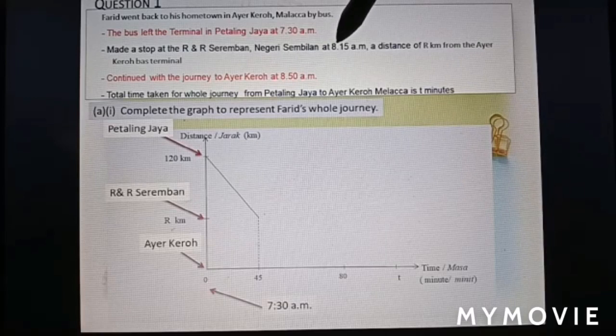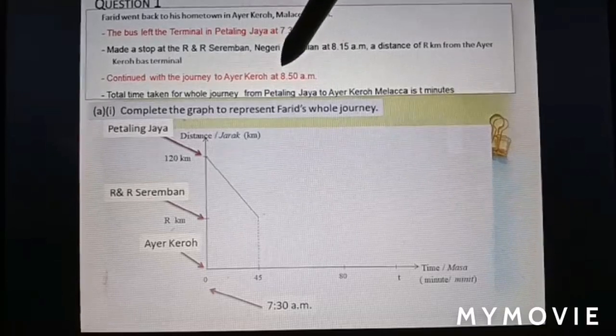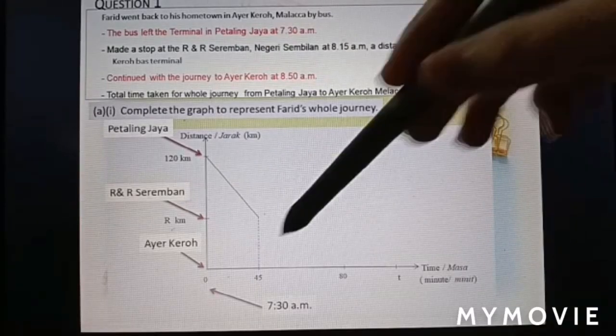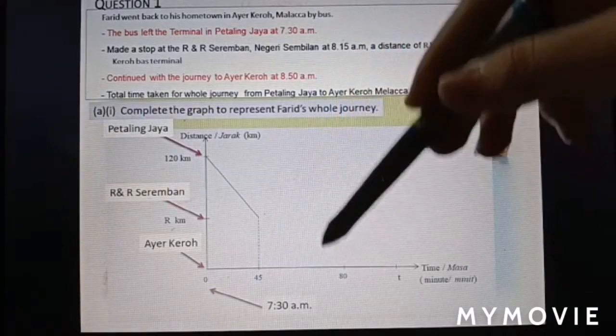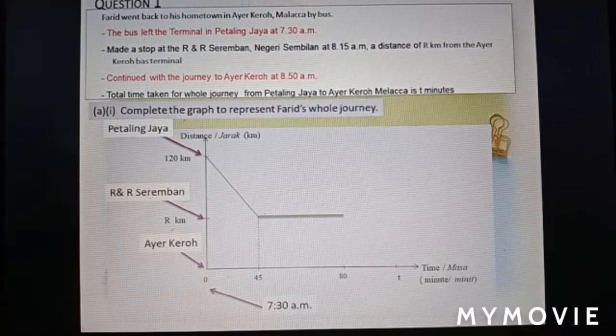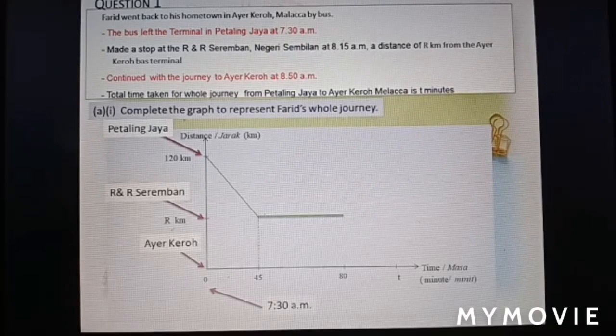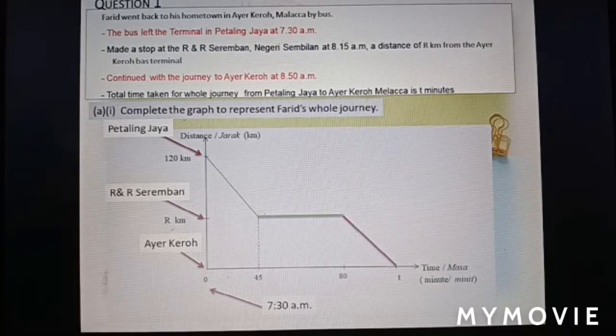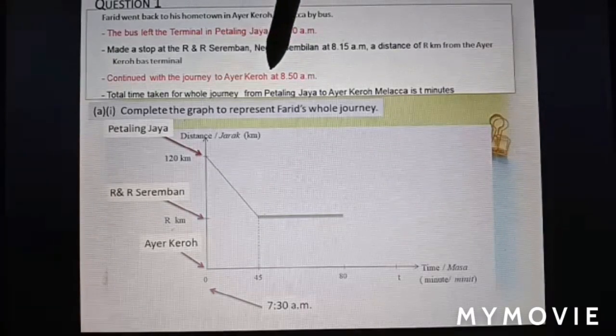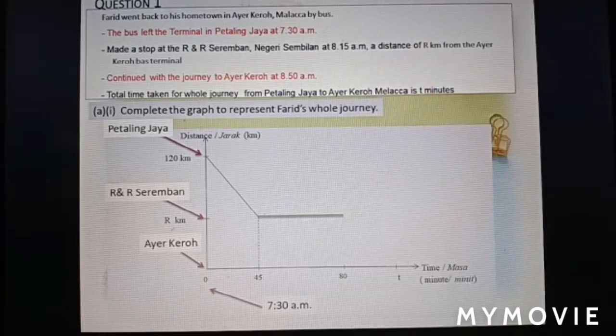At R&R Seremban at 8:15 to 8:50 a.m. So, the duration from 8:15 a.m. to 8:50 a.m. is 35 minutes. 45 plus 35 equal to 80. So, means here, we need to draw a horizontal line. Still remember why we draw a horizontal line? Because the bus stop here, R&R Seremban for 35 minutes. Continue with the journey to Ayer Keroh at 8:50 a.m. means we need to draw the line down to horizontal line.